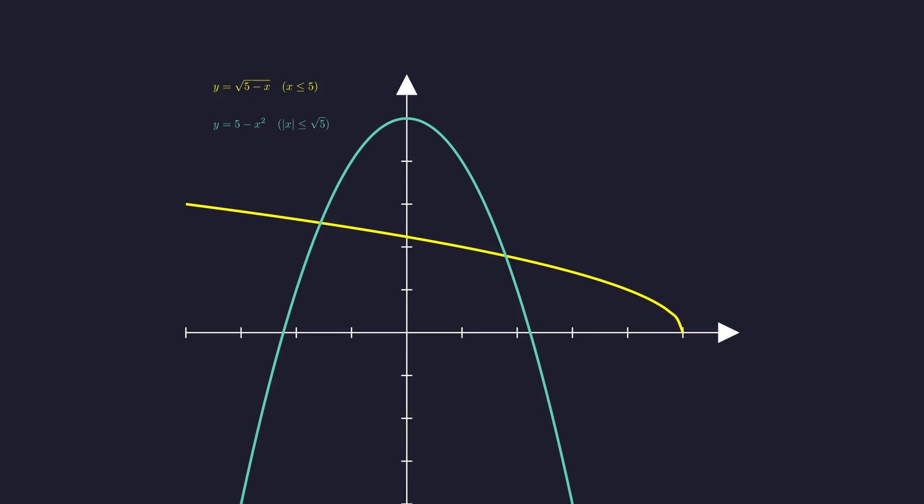Notice the domain restrictions. For the square root to make sense, the variable x must be less than or equal to five. For the other side, five minus x squared must be greater than or equal to zero. So the variable x must be between negative square root of five and positive square root of five. This tells us to expect two real solutions within these domains.